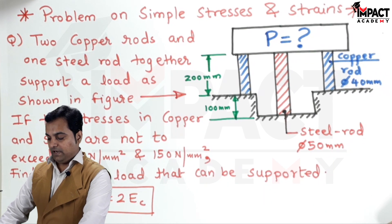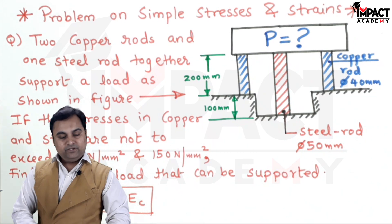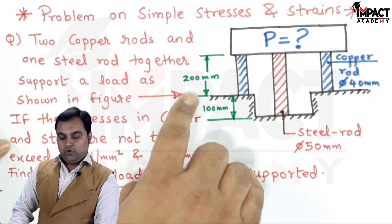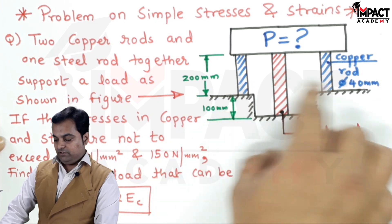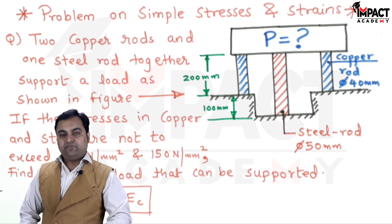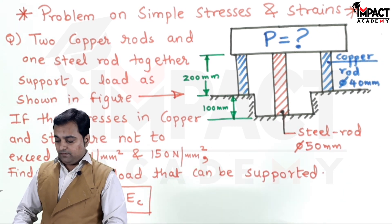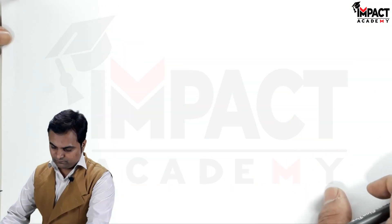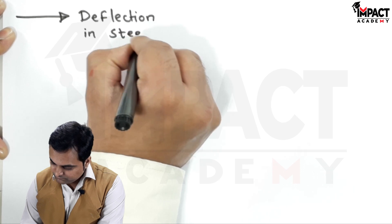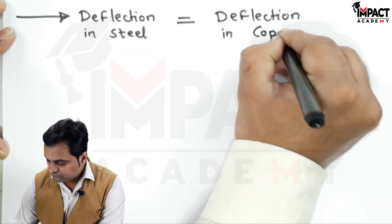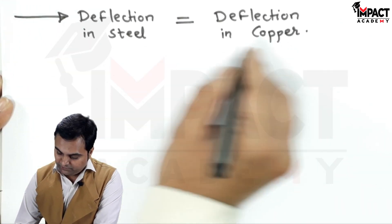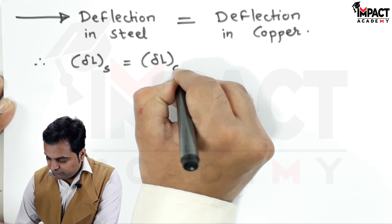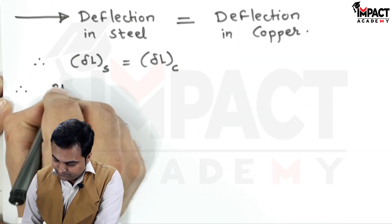The next condition I will use is that since both rods are sharing the same load, and the copper rods have a length of 200 mm while the steel rod has a length of 300 mm, the deflections in both rods must be equal. So the condition is: deflection in steel equals deflection in copper. Deflection is given by the formula PL/AE.